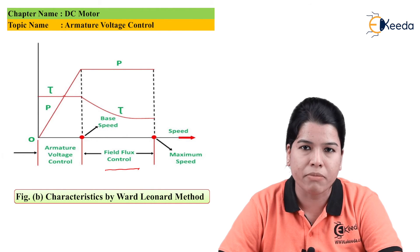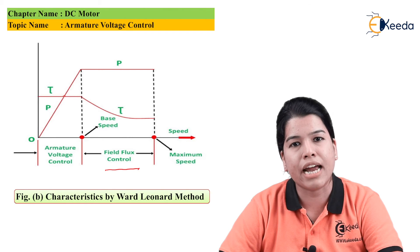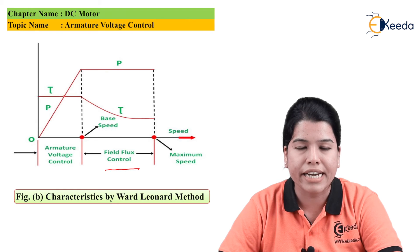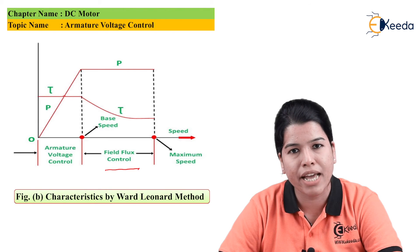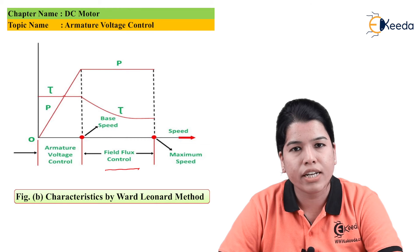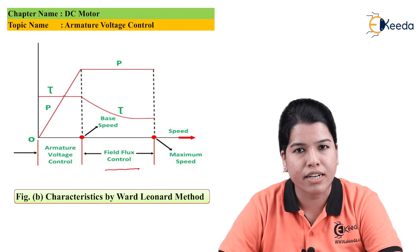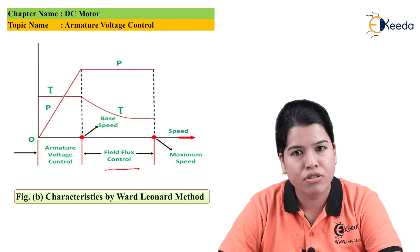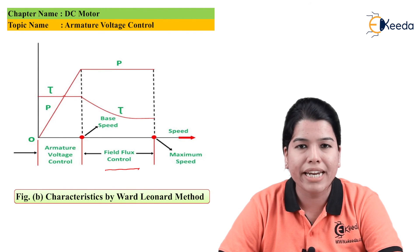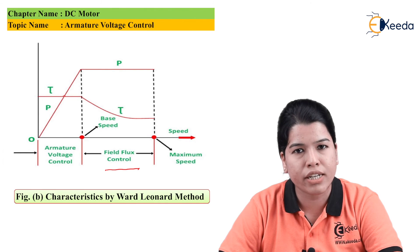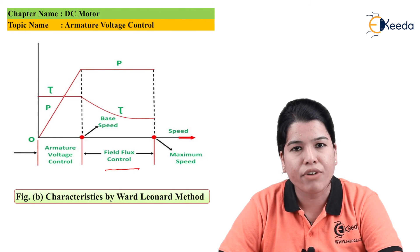The main drawback of this method is that controlling the speed of one motor requires two extra motors — the AC motor driving the generator — all of the same rating, resulting in a huge amount of wasted power. The efficiency is reduced and large space is required. The main advantage is that a wide range of speed control can be obtained, both above and below the rated speed, and the method is very efficient.